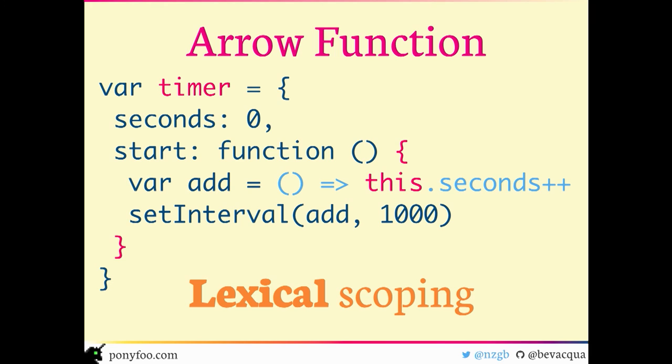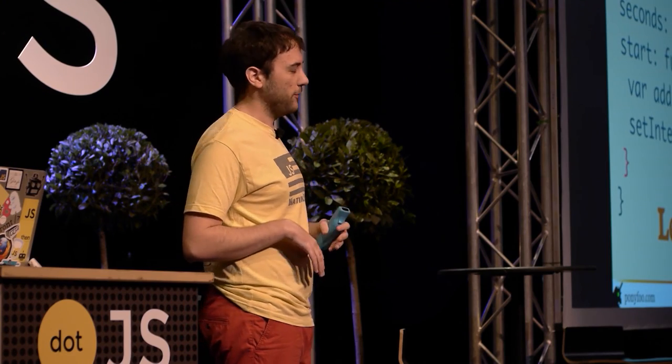The big difference between regular functions and arrow functions is lexical scoping, meaning that 'this' in the arrow function refers to the outer context. This is usually what you want with arrow functions because it makes it easier — for instance, if you inline an arrow function in a setTimeout — to reference 'this' from the outside and not the context of that anonymous function.